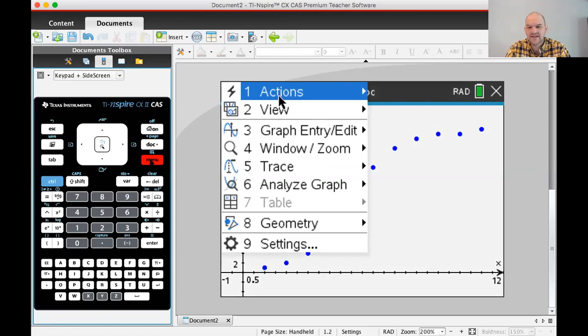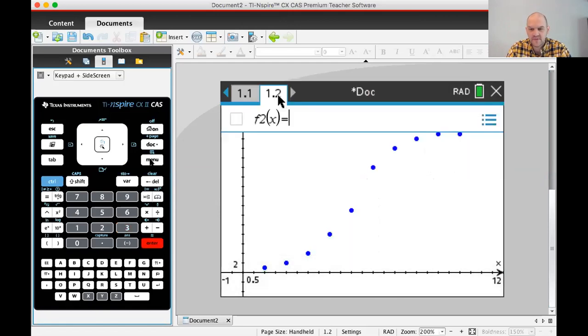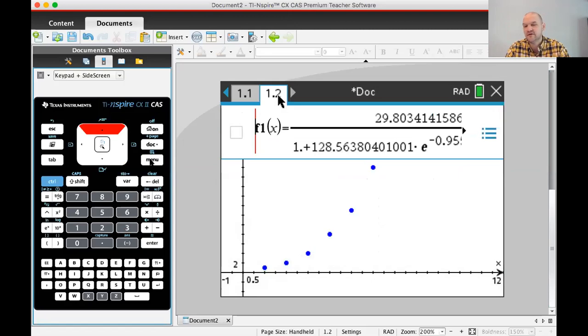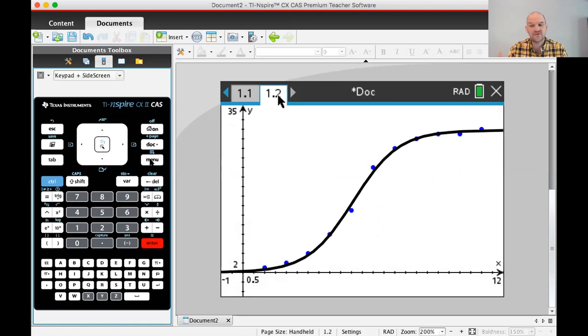So menu. I need to change back to function mode, so 3, back to function, and then press up to get my function. You can see it's already there. And thank God, because we don't want to type that, and press enter. Fits it really nicely. OK, so look at the curve, and just take it in.